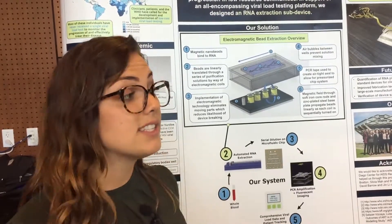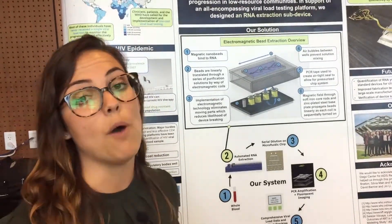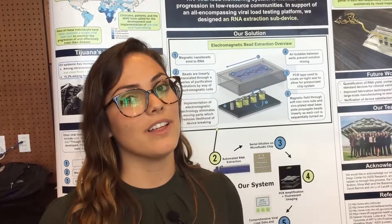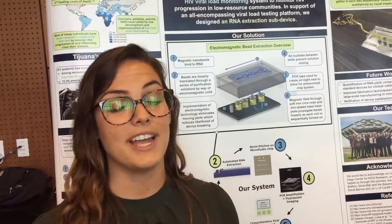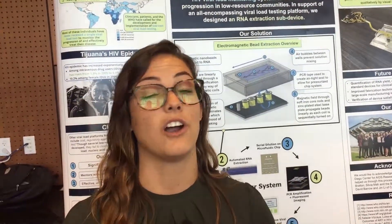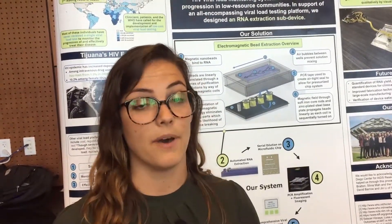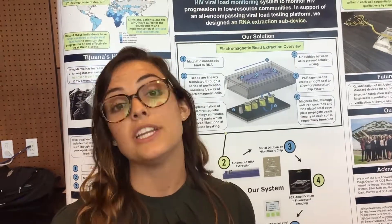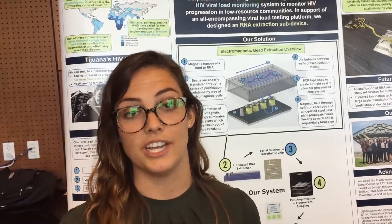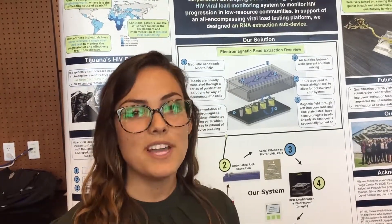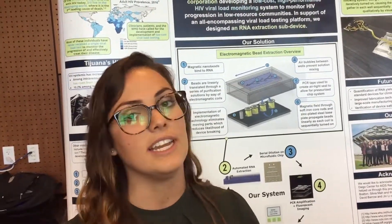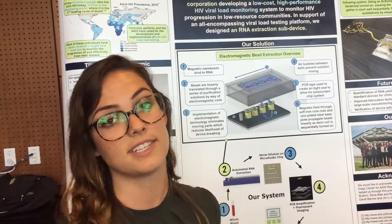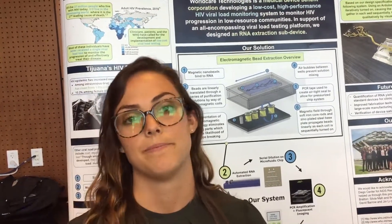With our system you're going to get an output — say it's 2,000 copies per milliliter — well that means that your antiretrovirals are not working very well, which means you need to change your medication. This way doctors can give patients the information they need at a price they can actually afford with this kind of system.